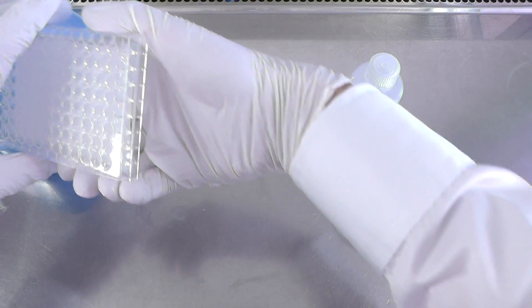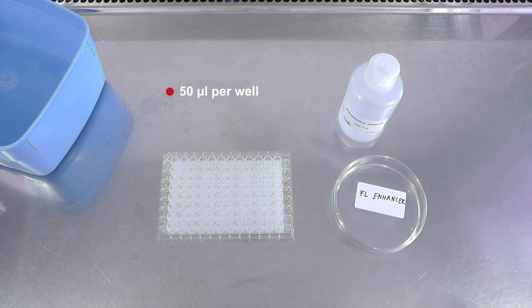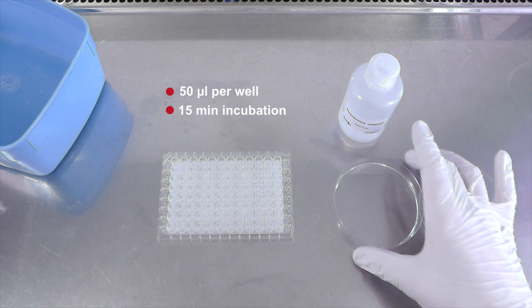Here you can see the technician emptying the last round of PBS wash right before the enhancer is added. 50 microliters per well is incubated at room temperature for 15 minutes.